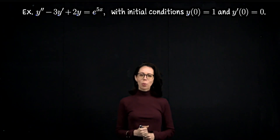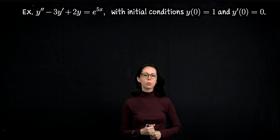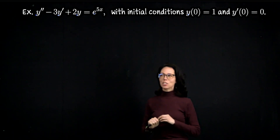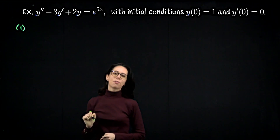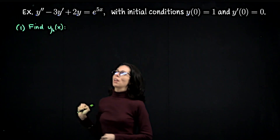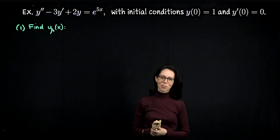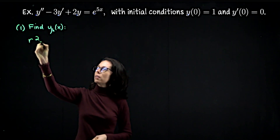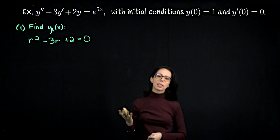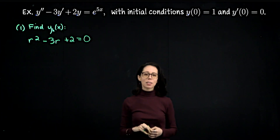Let's conclude with this example. We would like to use the method of undetermined coefficients to solve the differential equation y double prime minus 3y prime plus 2y equals e to the 5x. Here our forcing function is g of x equals e to the 5x. The first step is to find the homogeneous solution y sub h. We set up the characteristic equation: r squared minus 3r plus 2 equals 0. We've looked at these several times.